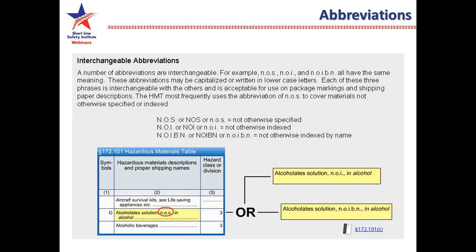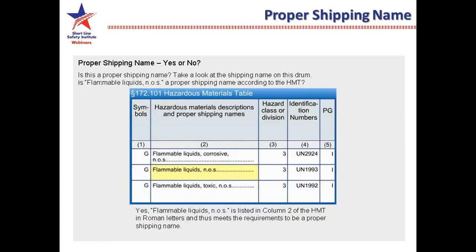A number of abbreviations are interchangeable: NOS, NOI, NOIP all have the same meaning. These abbreviations may be capitalized or written in lowercase letters, and each is acceptable for use on package marking and shipping papers. The HMT most frequently uses the abbreviation NOS to cover materials not otherwise specified. Take a look at the shipper's name on the bill of lading — is flammable liquids NOS a proper shipping name according to the HMT? Yes, flammable liquids NOS is a proper shipping name and you can compare that with what your shippers give you.